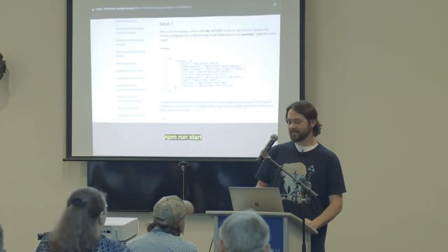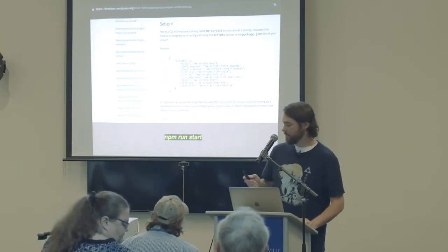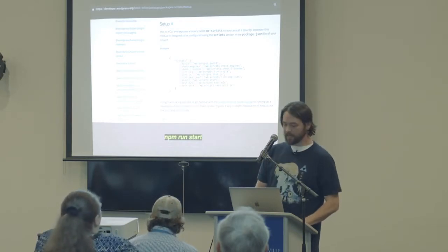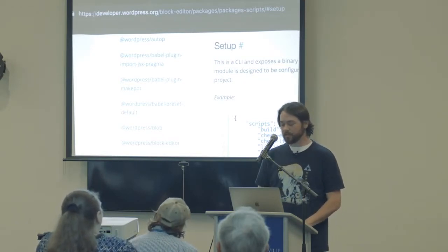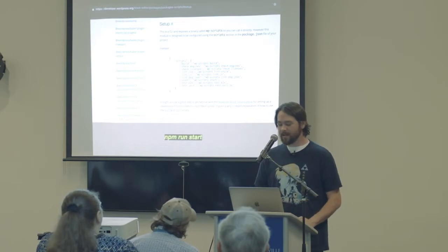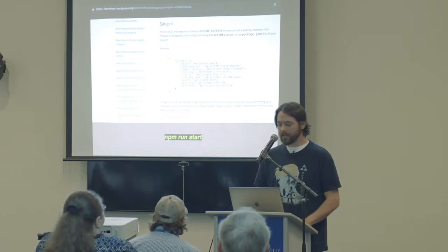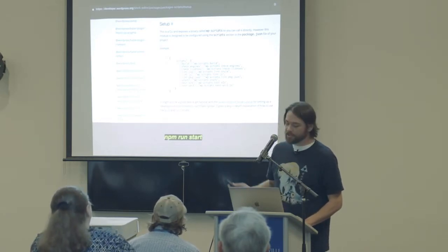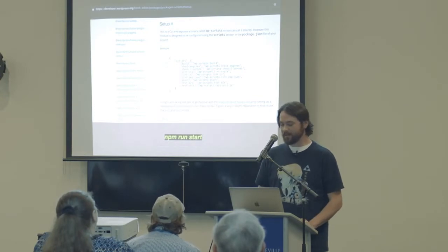The @wordpress/scripts package — you can find it at developer.wordpress.org under block editor packages. This shows you helpers to do things like build and linting. The main scripts you want are build and start. After you have those in your package.json, you can just run npm run start. It will keep rebuilding your files as you work, which is pretty handy.